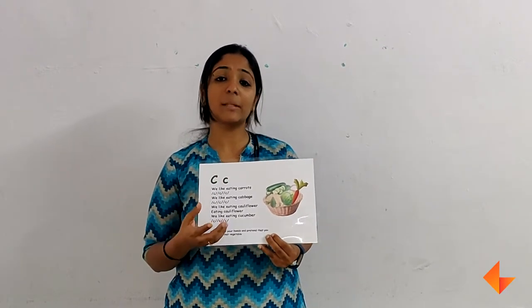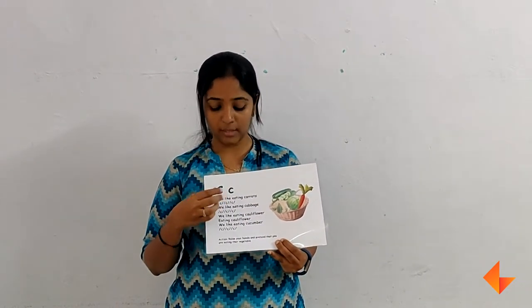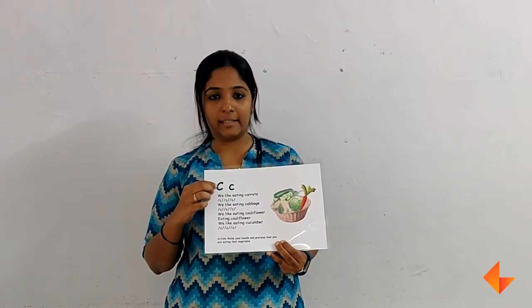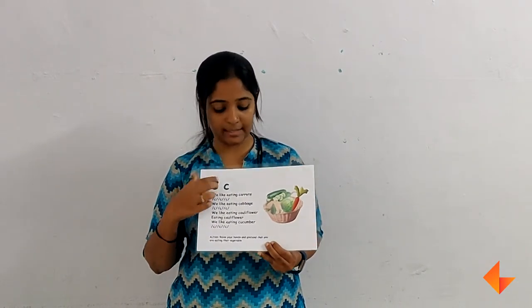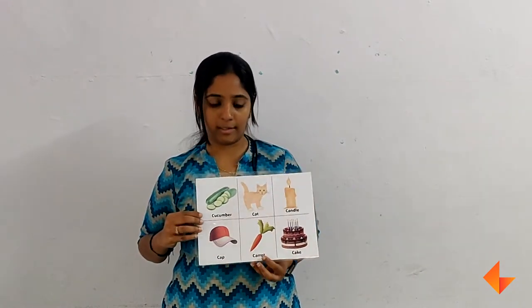Remember to discuss about the picture first, then move on to singing the rhyme, then discuss about the sound, then identify the letter. Once you are done discussing all this, then you move on to vocabulary words.